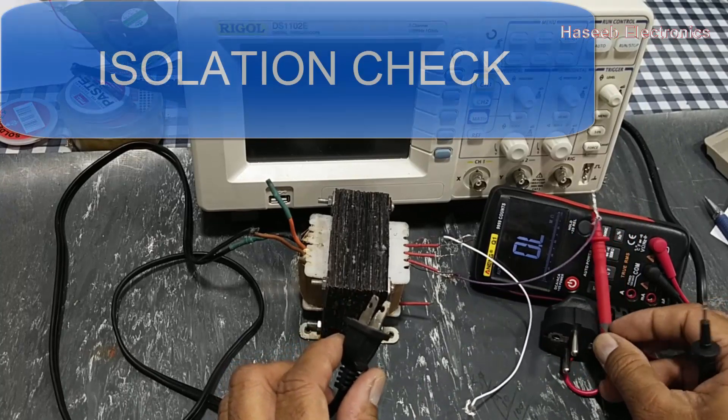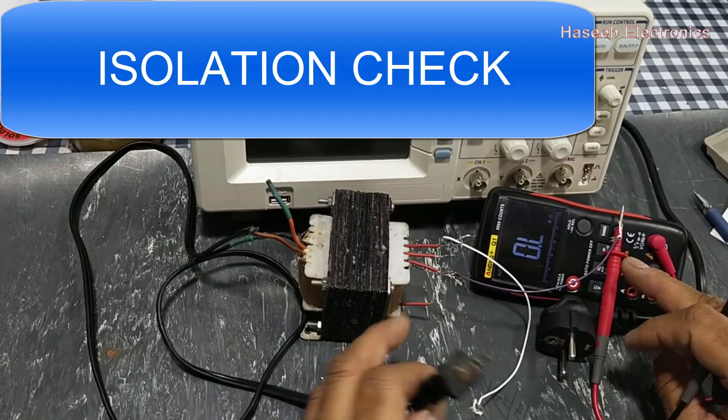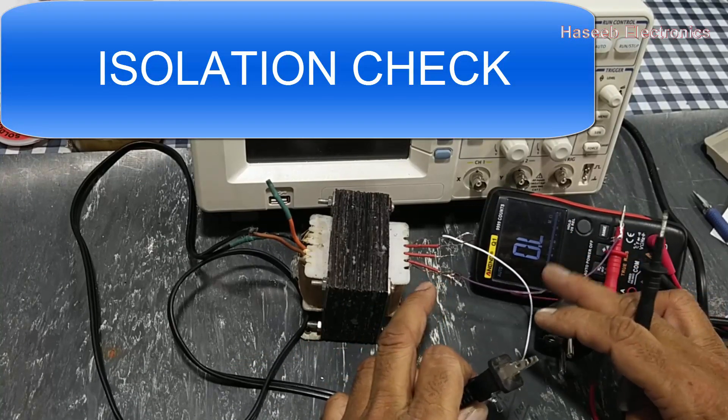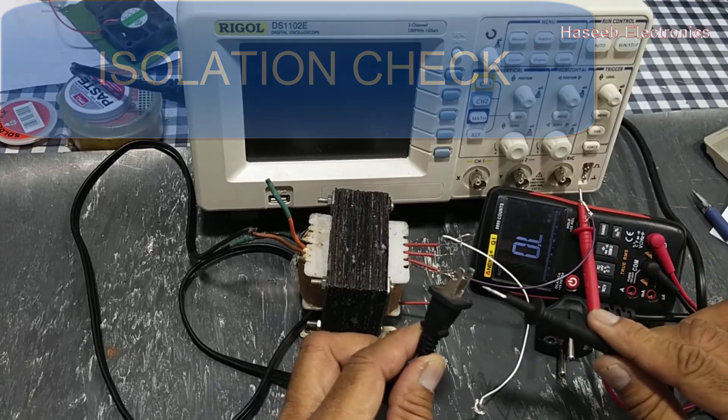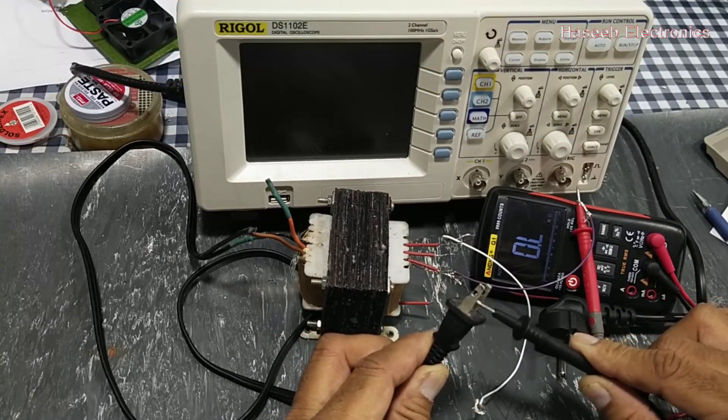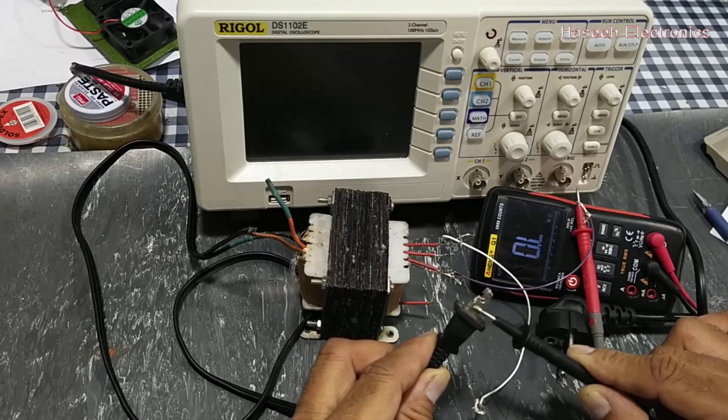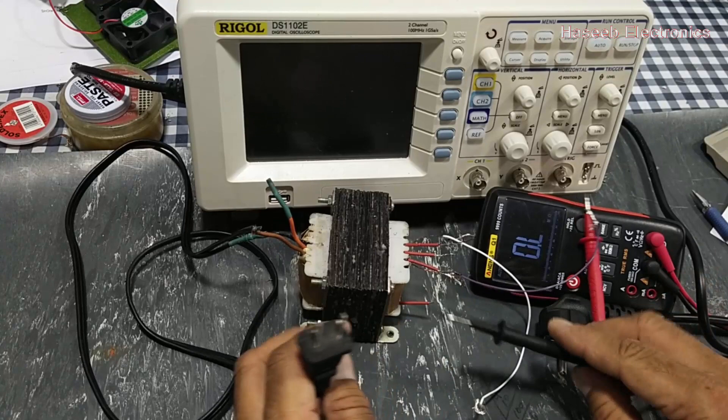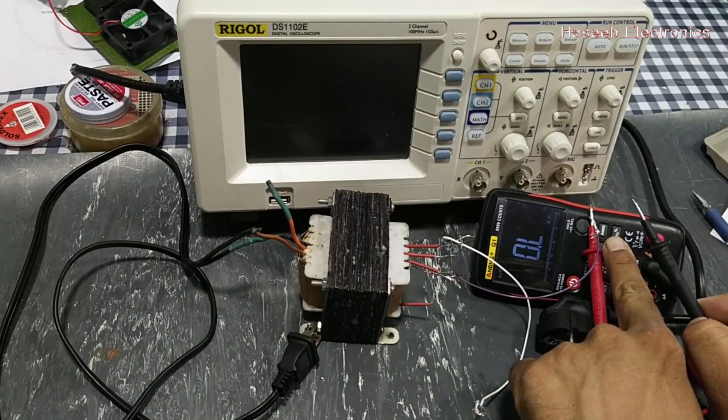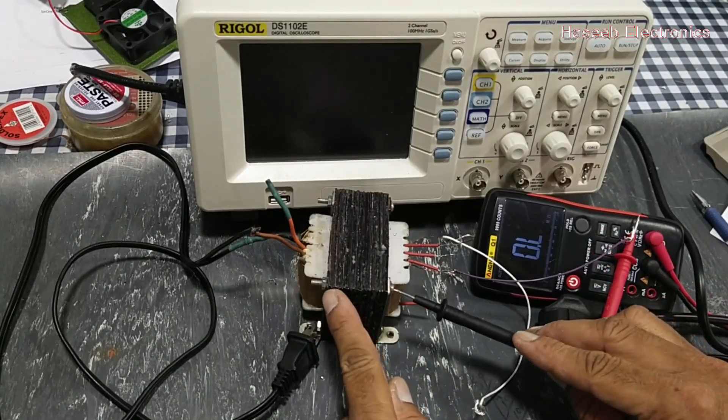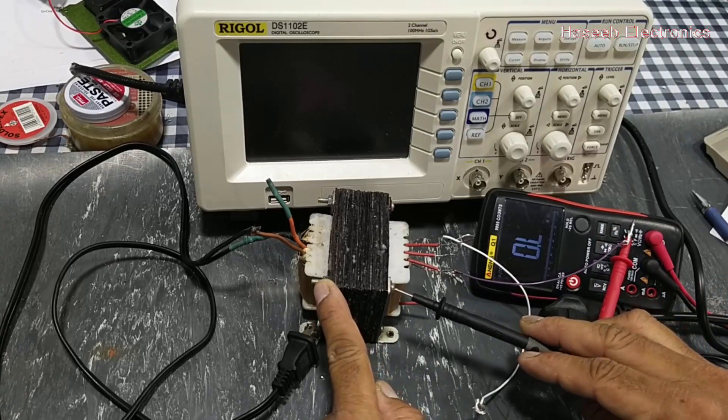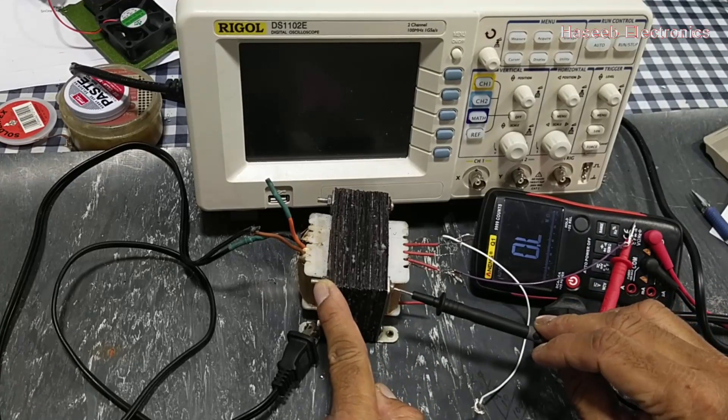Now we can connect one test lead to one end of the secondary winding and the second test lead to one side of the primary winding. We don't have any resistance here. It should not have any resistance. Now one lead is connected here, second lead connected to the chassis, the core, so it is open. That's good. Winding should not have any connection with the core.